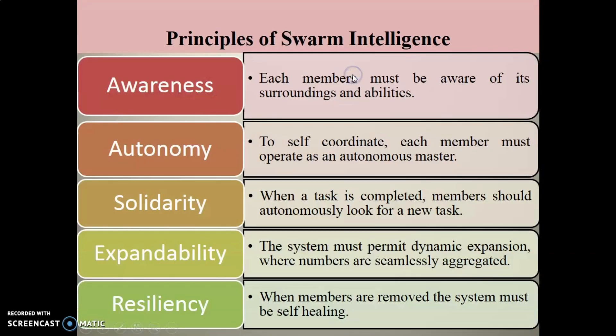There are five principles of Swarm Intelligence. The first one is Awareness — each member of the Swarm must be aware of its surroundings and abilities. The second is Autonomy — to self-coordinate, each member must operate as an autonomous master. This is a decentralized system with no master-slave concept, so each member of the Swarm works as an autonomous master.